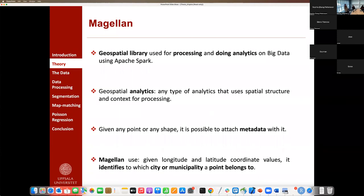Then we will use Magellan. It consists of a geospatial library that is used for processing and doing analytics on big data using the Apache Spark framework. What is geospatial analytics? It's any type of analytics that uses both spatial structure and context for processing. Given a point or a shape, using Magellan, we can attach metadata to it, which is basically information about what's surrounding the point. In this research, we will be using Magellan. For example, given some latitude and longitude points, using Magellan, we will identify to which city or municipality a point belongs to.